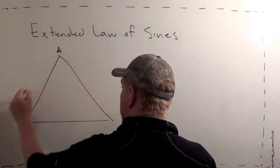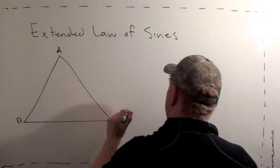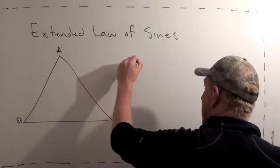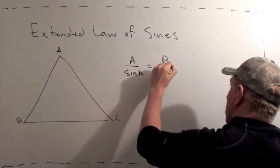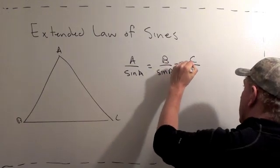At triangle ABC. You'll remember the Law of Sines is A over sine A equals B over sine B equals C over sine C.